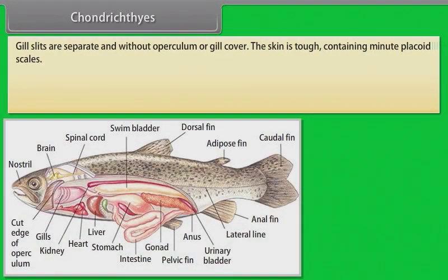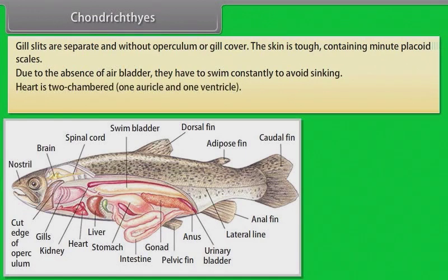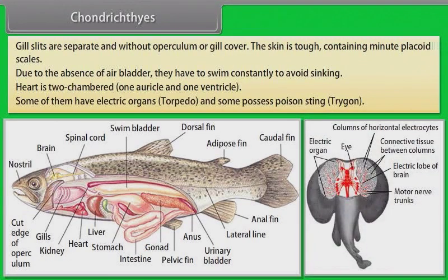Gill slits are separate and without operculum or gill cover. Their skin is tough, containing minute placoid scales. Due to the absence of air bladder, they have to swim constantly to avoid sinking. Heart is two-chambered: one auricle and one ventricle. Some of them have electric organs (torpedo) and some possess poison sting (trigon).